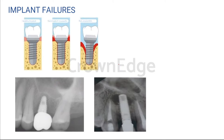Which cement can be used? We can normally use GIC, but what we normally use is zinc phosphate cement. Either way, retrievability becomes a problem. If aesthetics is not of prime concern, go for screw retained. Whenever aesthetics is important, go for cement retained — and we can use either zinc phosphate or GIC as cement. Please do not use resin cements, because with resin cements retrievability becomes a thousand times more difficult.